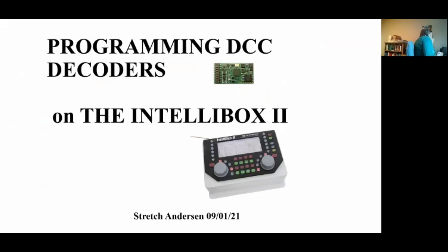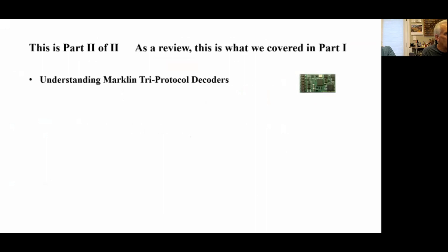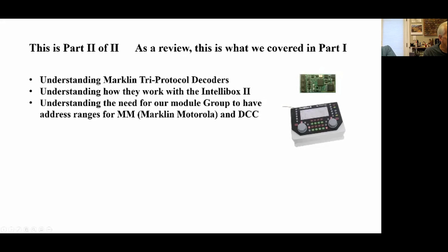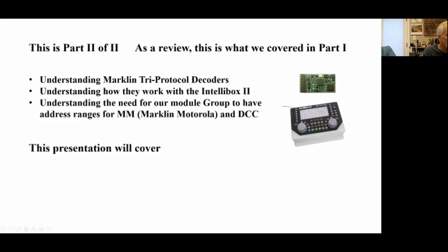This is part two of our presentation from last week. This is the part where we're going to actually work on programming the decoders themselves. As a review, this is what we covered in part one: we understood what a Marklin tri-protocol decoder is and how they work with the IntelliBox 2, and that there's a need for our module group to change address ranges — one group for older Marklin Motorola chips and another for DCC, so we don't have to keep changing what an address value's protocol is on the IntelliBox.